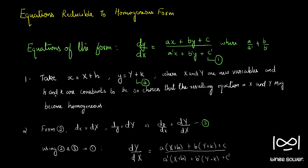So the first step is we use the substitution: small x equal to capital X plus h, and small y equal to capital Y plus k. Our new variables are capital X and capital Y, and we will have two new constants h and k. We will choose the values of h and k so that, once that substitution is made, our new equation transforms to a homogeneous equation.